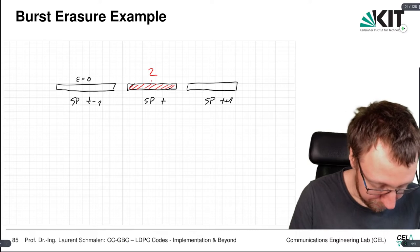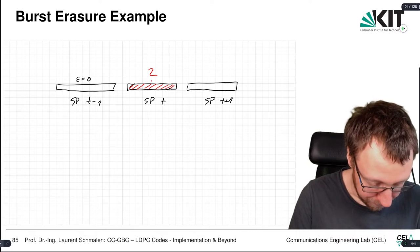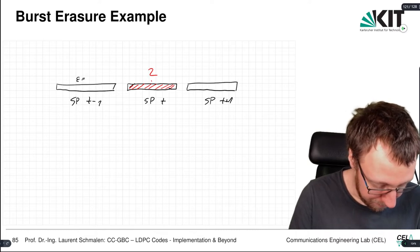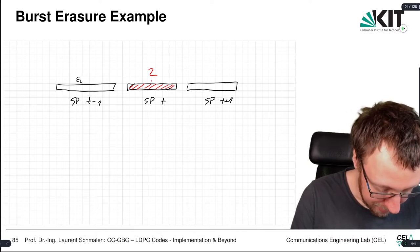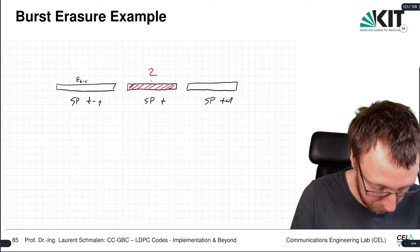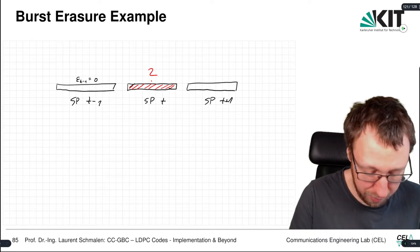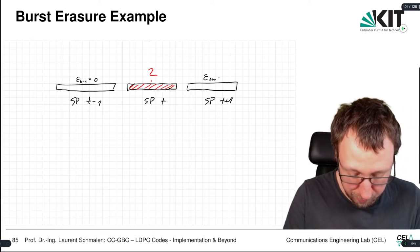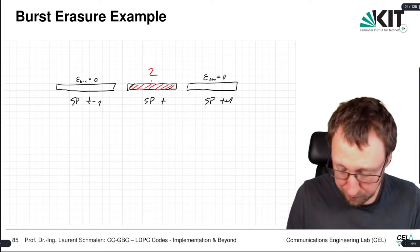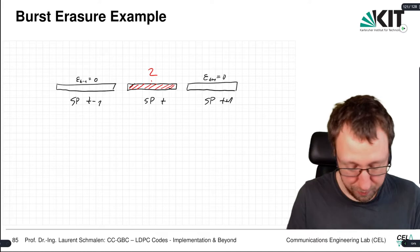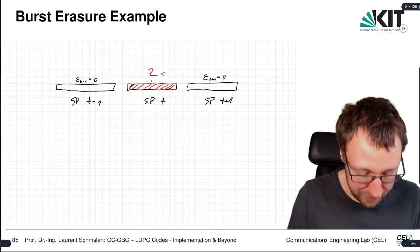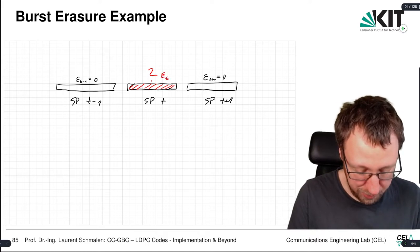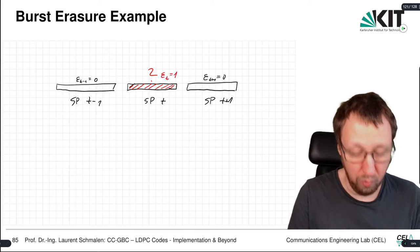Formally, ε_{t-1} is equal to zero, ε_{t+1} is equal to zero, and the erasure probability at spatial position t is equal to one.